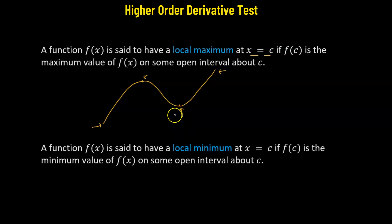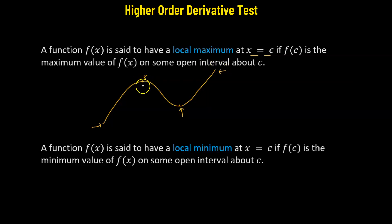Now, how do we check whether these points are actually having a local maximum or a local minimum? For this, we are going to use the derivative test. That means we will take the derivative once and check whether if this point is at a local maximum or at a local minimum.